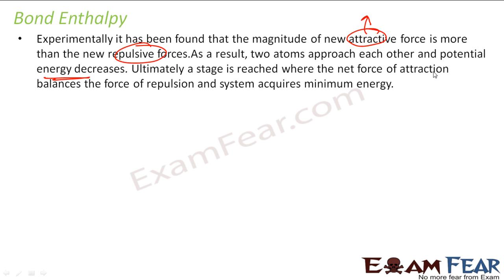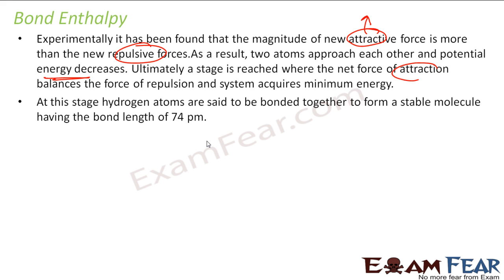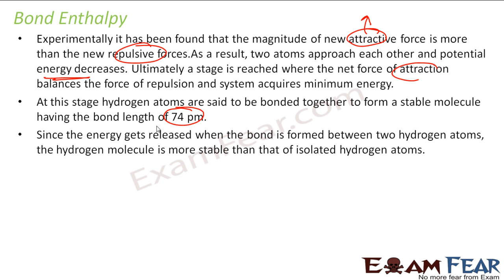Ultimately, at a stage where the net force of attraction balances the repulsive force, the system attains minimum energy. At this stage, the distance between two hydrogen atoms is 74 picometers. That is why the bond length of hydrogen is 74 picometers.